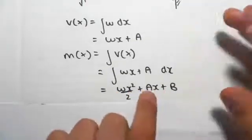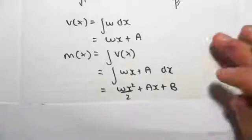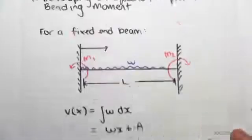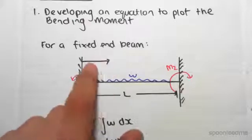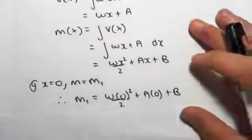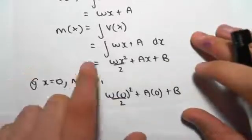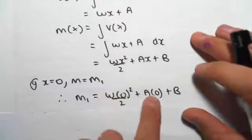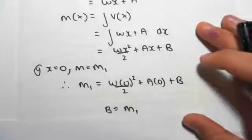Now we have two unknowns, so we're going to have to develop two boundary conditions to solve this. We know that at x equals 0, M equals M1. Here's our reference axis. At x equals 0, the moment is equal to M1. So substituting in for moment, we have M1 equals 0 plus 0 plus B. So that means that B equals M1.